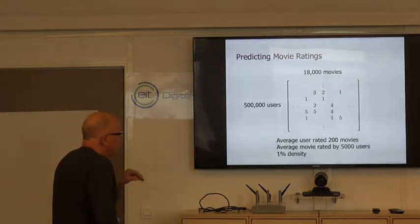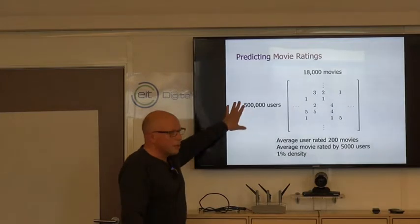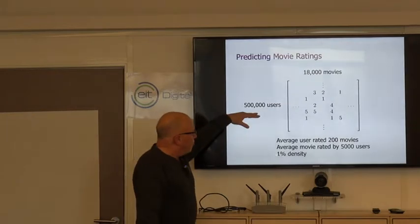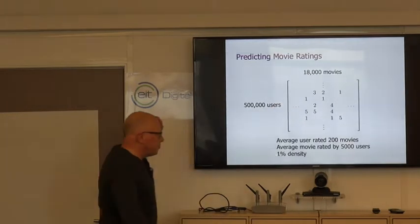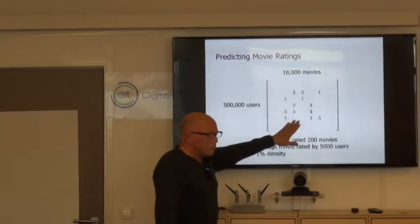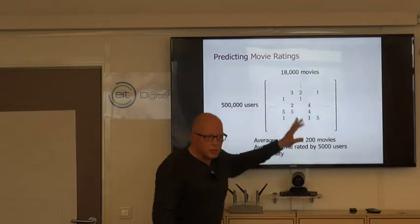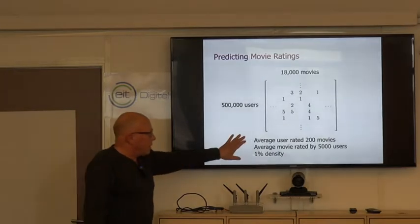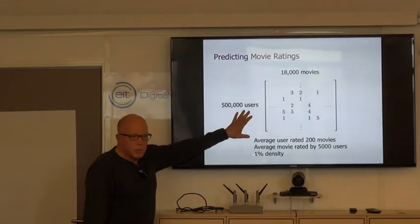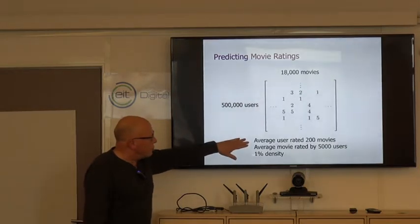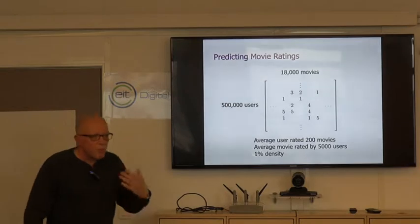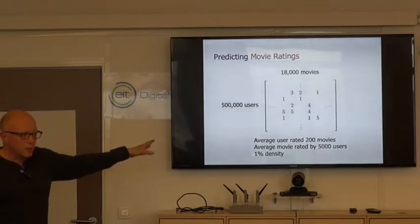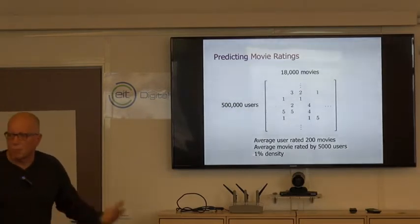The idea was they created what you would think of as an enormous matrix, which was mostly missing. About 500,000 rows, 18,000 movies. Inside the matrix were the ratings for movies that people had actually watched. The average user rated about 200 movies. The average movie was rated by about 500 users. This means that basically about 1% of the values in this matrix were present.